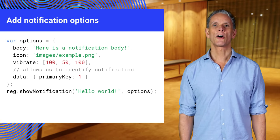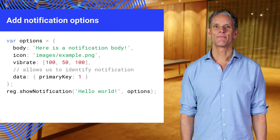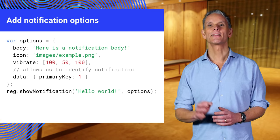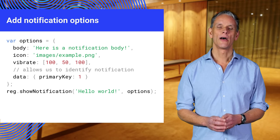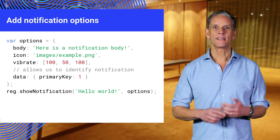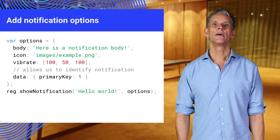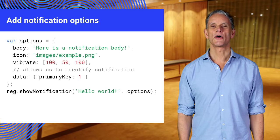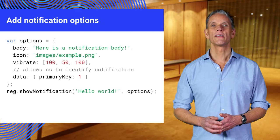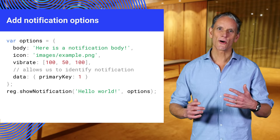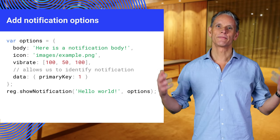We can specify an optional options object to configure the notification. This is passed in as the second argument in the showNotification function. The body property is the body text displayed below the title. Icon is the image displayed at the top of the notification. Vibrate is the vibration pattern for phones — in this case a hundred milliseconds on, fifty milliseconds off, a hundred milliseconds on, and so on.